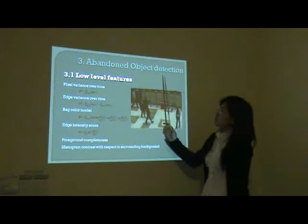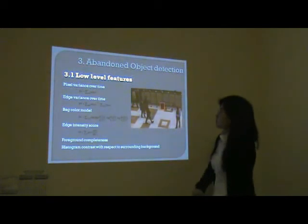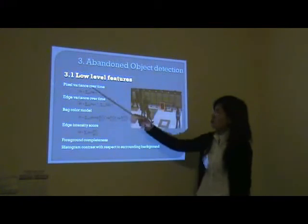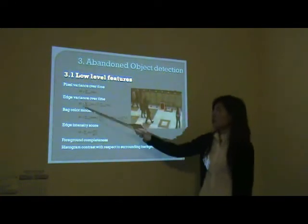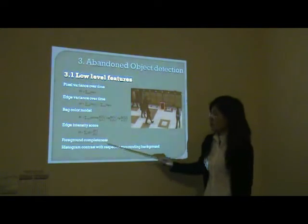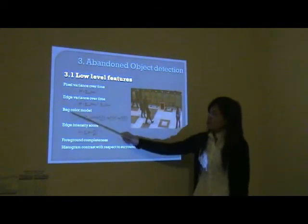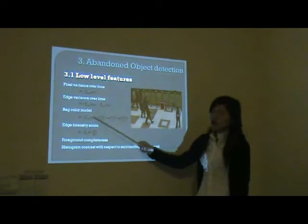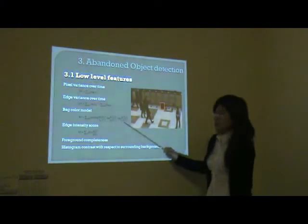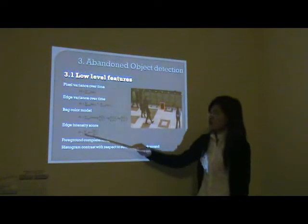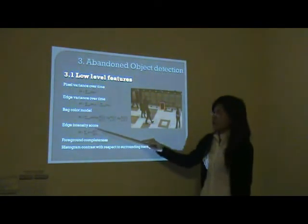The third part is abandoned object detection. It aims to detect abandoned objects in surveillance videos. It is based on low-level features. We extract several abandoned object features including pixel variance over time, edge variance over time, black color model, edge intensity score, foreground completeness, and histogram contrast with respect to the surrounding background. For the black color model, it is defined as hypothesis testing with respect to typical false alarms — that is, ground, walls, and vegetation. The edge intensity score is defined as KL divergence of the edge intensity between the suspect region and the whole image.